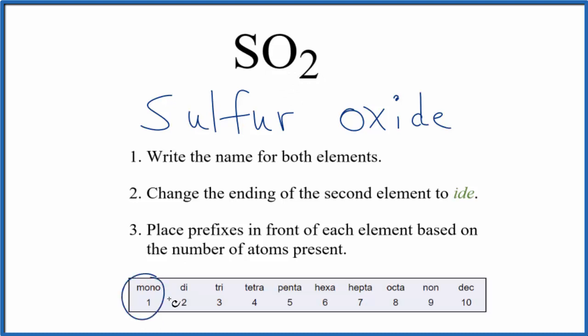So when we have a one, we normally use mono, but not for the first element. So you'll never see monosulfur. Mono is always just for the second one. So we leave this as sulfur. And then two, that is di. So it's going to be sulfur dioxide.